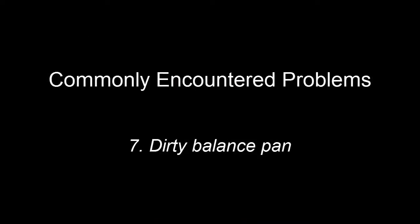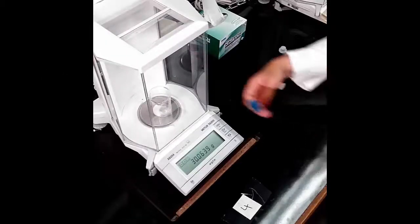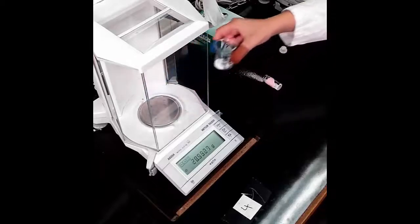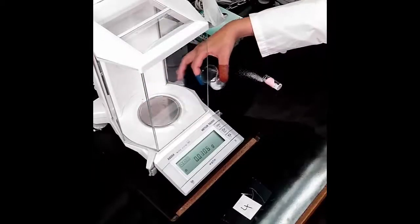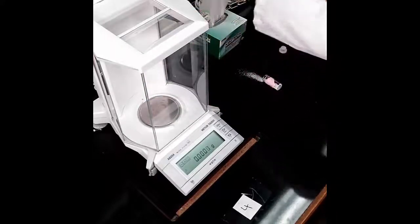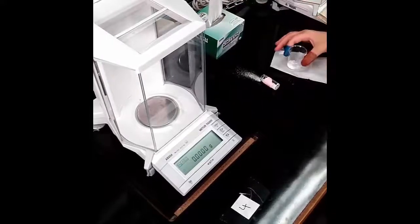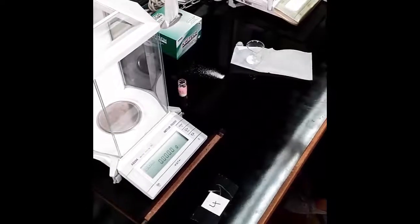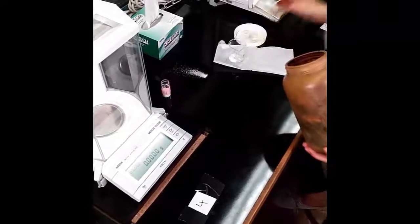7. Dirty Balance Pan. If you happen to knock over the vial and spill sample on the bench, place the beaker on a kimwipe to prevent particles from adhering to the outside of the beaker. Immediately clean up the mess. Be sure that any spilled solids are discarded into the solid waste container.